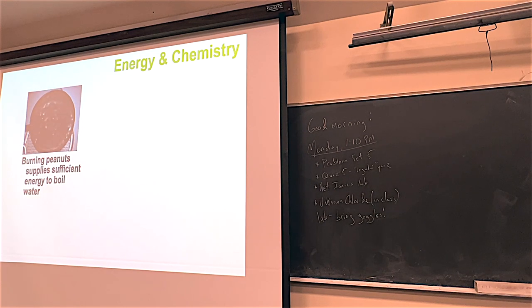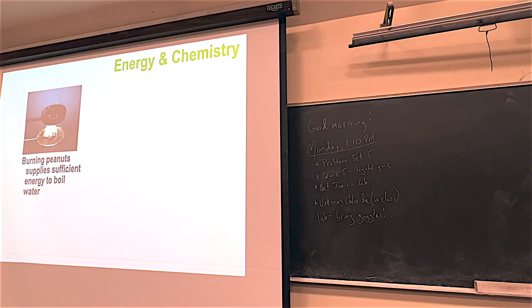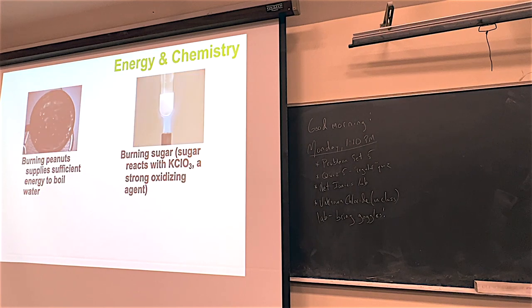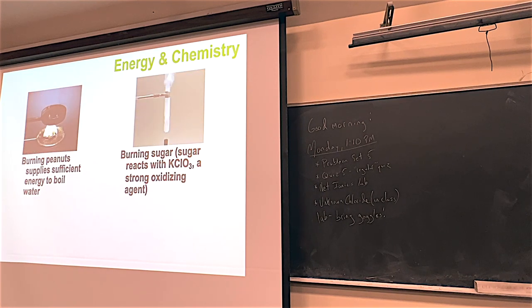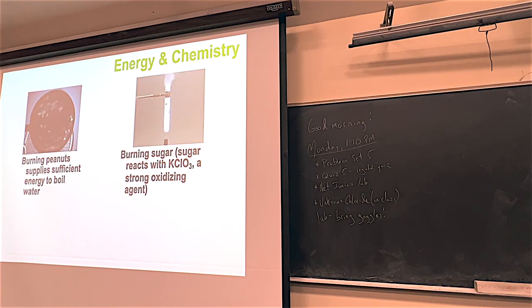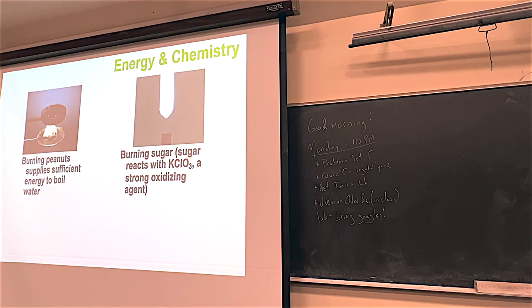Instead of talking about peanuts burning, I much prefer the gummy bear. If we combine one gummy bear - composed mostly of sucrose - with molten potassium chlorate, a violent reaction occurs. A surprising amount of energy is released by the reactants. Their atoms and molecules rapidly rearrange to form the products carbon dioxide, water, and potassium chloride. The reaction is said to be product-favored.